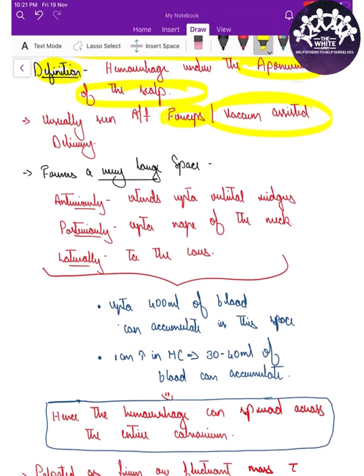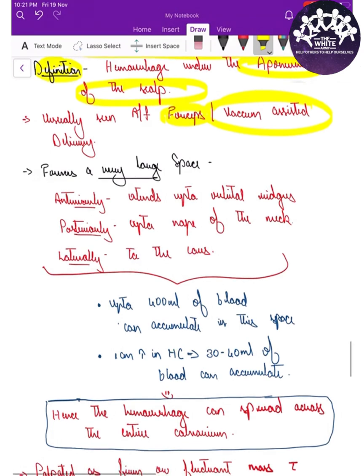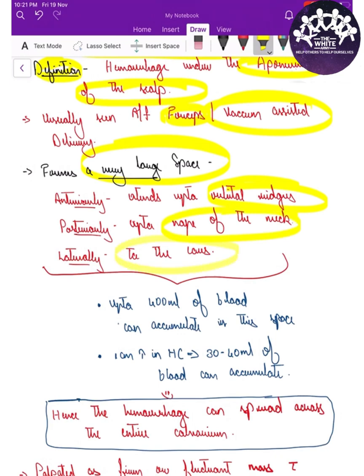Either forceps or vacuum-assisted delivery. The reason it should be detected earlier and monitored vigorously is because the sub-aponeurotic space is a very large space. Anteriorly it extends up to the orbital ridges, posteriorly up to the nape of the neck, and laterally up to the ear — basically expanding throughout the skull space.